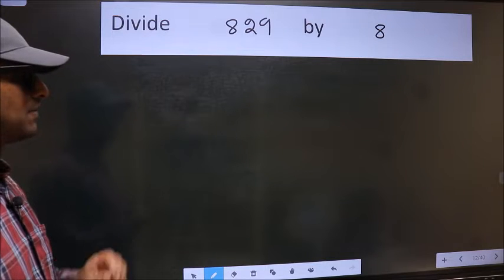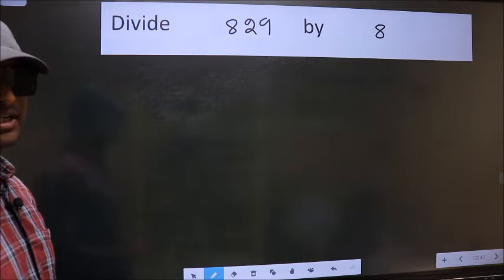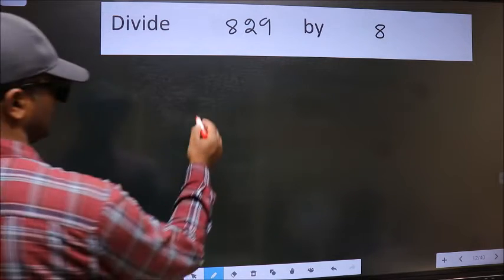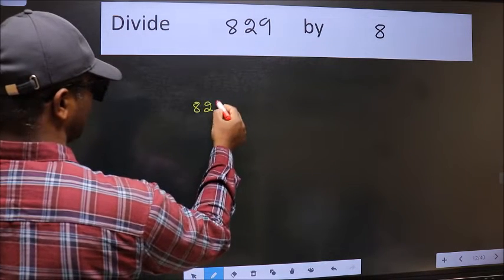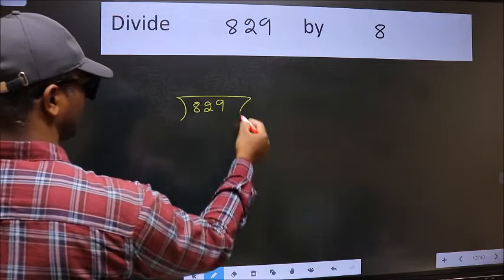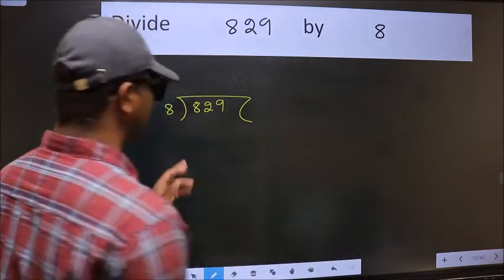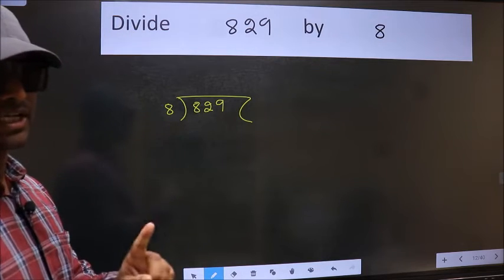Divide 829 by 8. To do this division, we should frame it in this way. 829 and 8 here. This is your step 1.